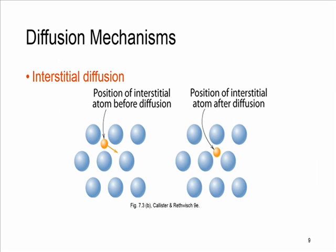The second type of diffusion mechanism is interstitial diffusion. Very small atoms, as you can see here, can diffuse between other atoms. This is the same figure, figure 7.3 in your book. Bear in mind that interstitial diffusion is more rapid than vacancy diffusion.